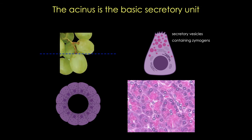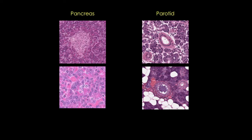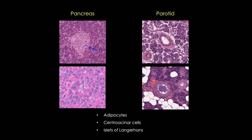So how in the world do we tell these two glands apart? There are four characteristics that can be used to help distinguish the pancreas from the parotid. I'll list them here first in alphabetical order, and then we'll look at each one more closely. First we can look at the amount of stromal fat, since adipocytes are more common in the stroma of the parotid gland. Next, we have central acinar cells, which are the cells that form the initial portion of the intercalated ducts in the pancreas. Third, we have the islets of Langerhans, found only in the pancreas. And finally, we can look for striated ducts, a type of intralobular duct found only in salivary glands.